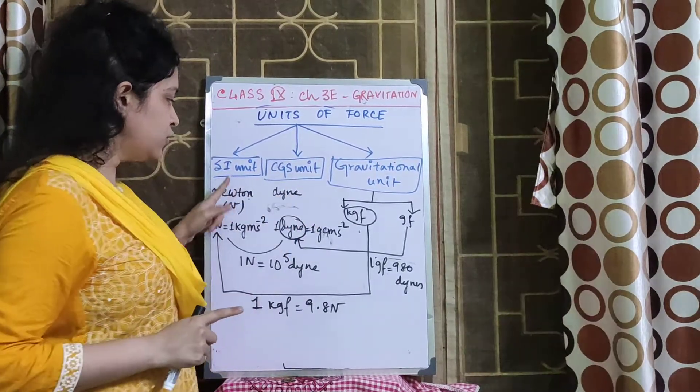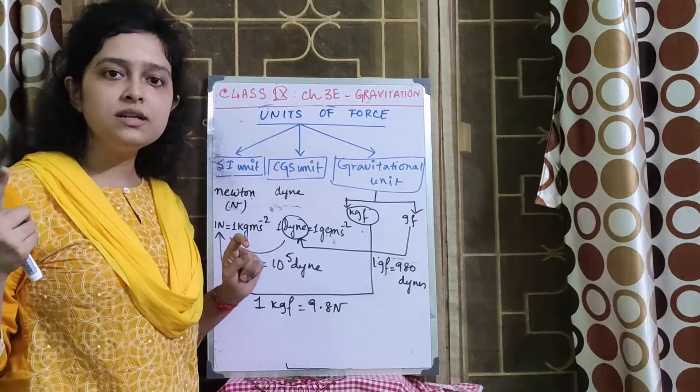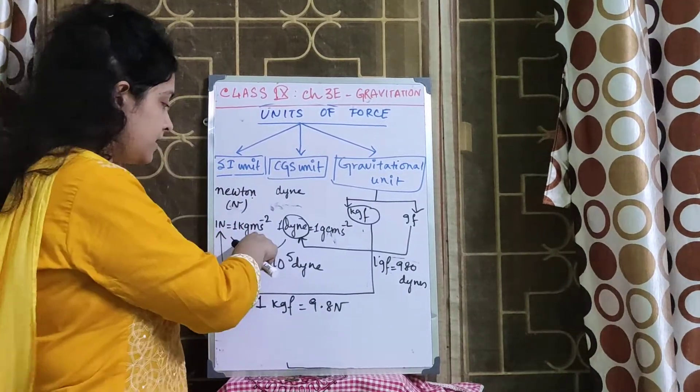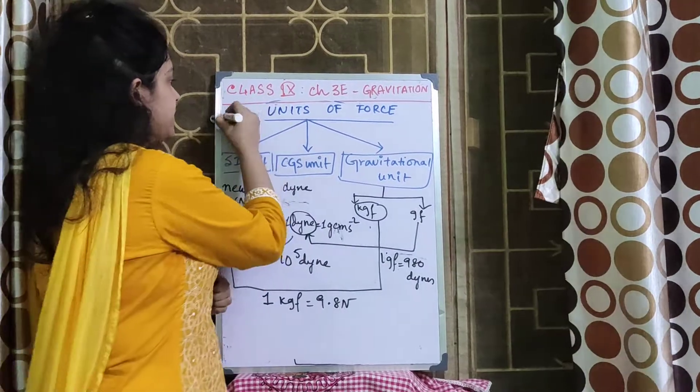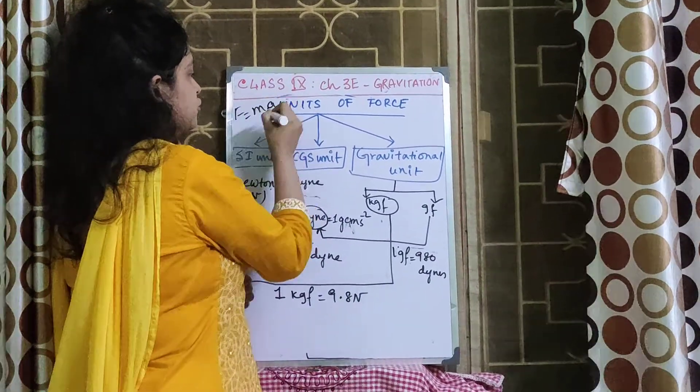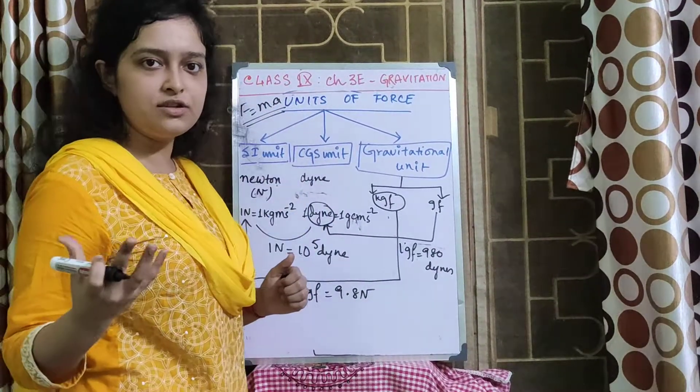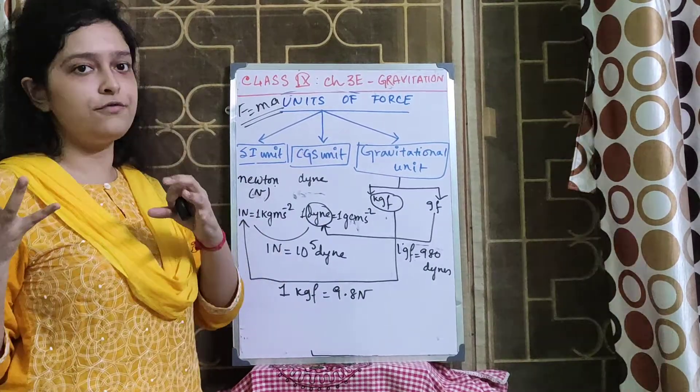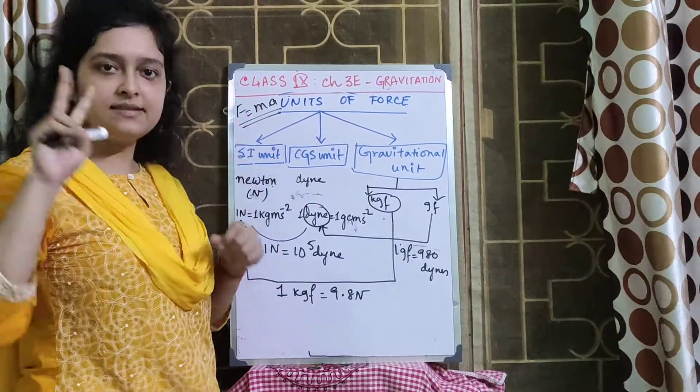This unit, SI unit, Newton. 1 Newton is 1 kg into 1 meter per second square. Because just follow this simple: F is equal to M into A, force is equal to mass into acceleration. So we can get units of force from Newton's second law of motion.